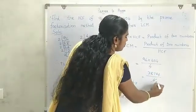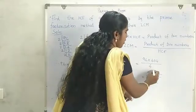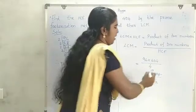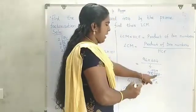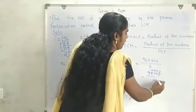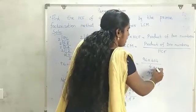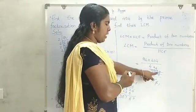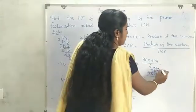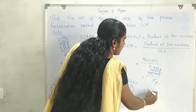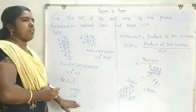Dividing 38,784 by 4: 38,784 ÷ 4 = 9,696. Therefore, LCM = 9,696. And HCF = 4. That's all.